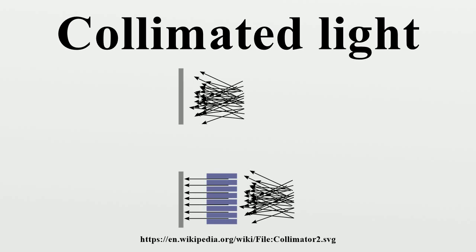Etymology: The word collimate comes from the Latin verb collimare, which originated in a misreading of collinear, to direct in a straight line.